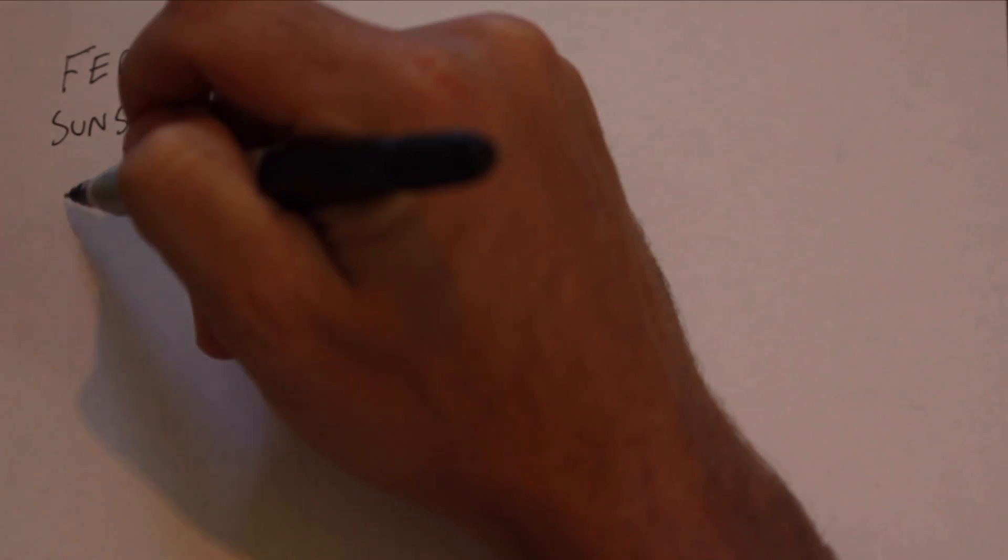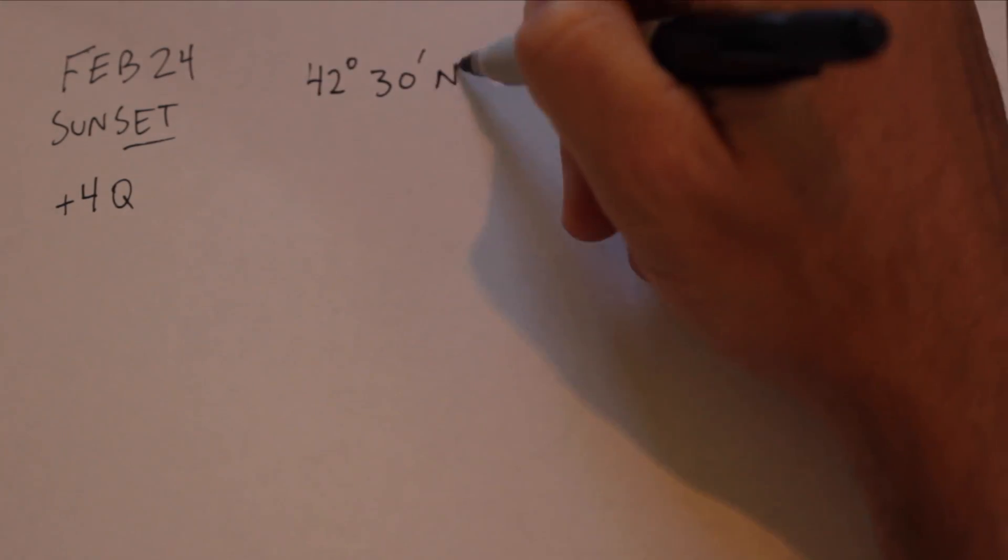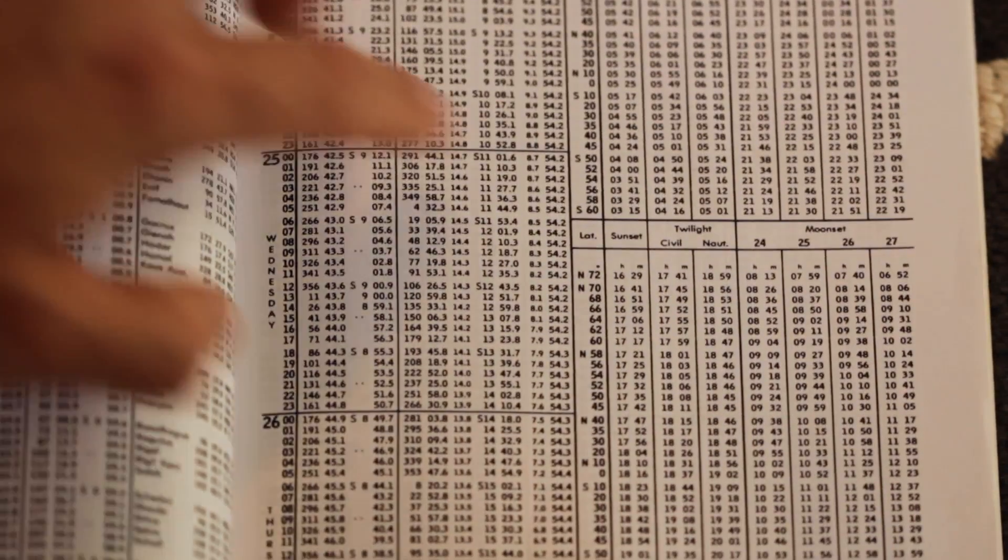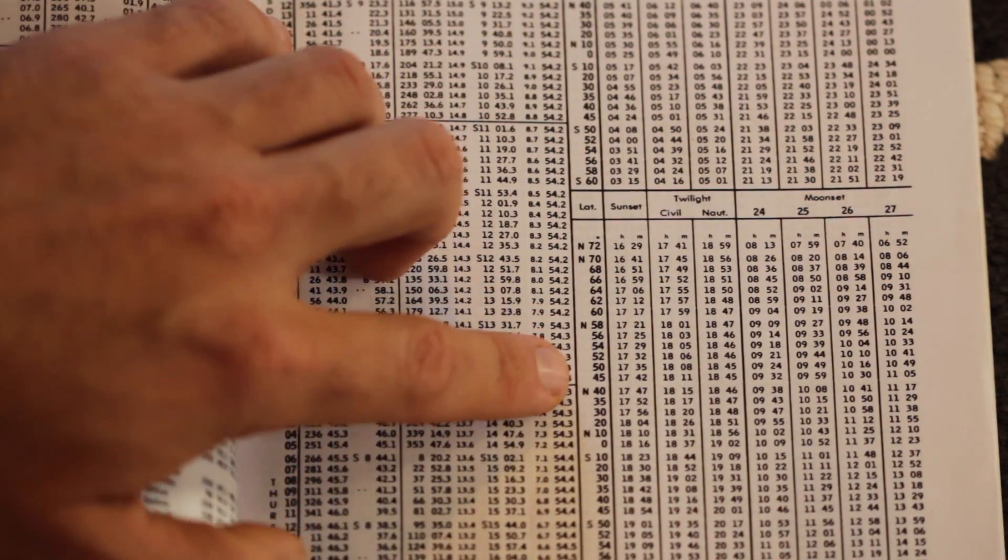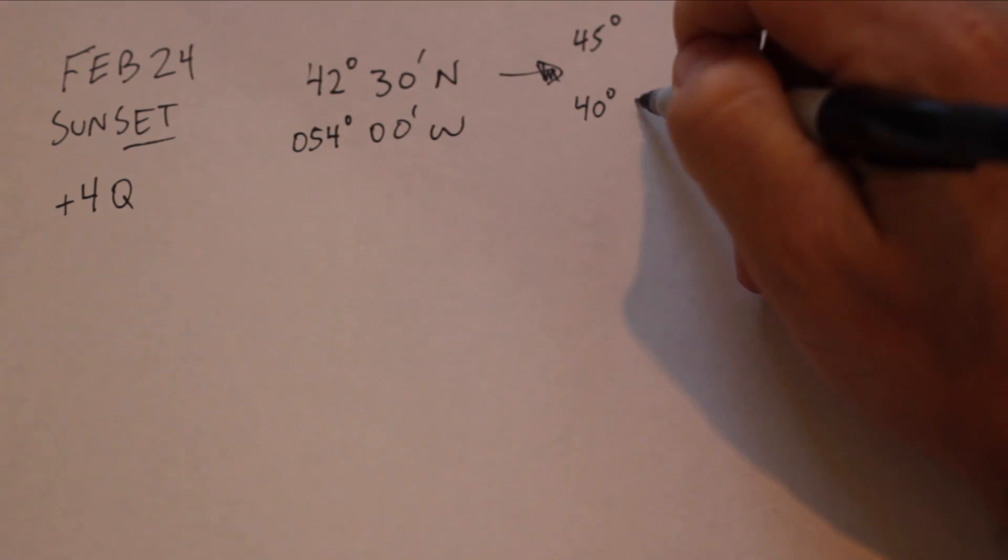Sunset is done the exact same way. So on 24 February, we are looking for sunset for position 42 degrees, 30 north, and 54 degrees west. First we correct for latitude. Again, our latitude isn't listed, but we are exactly halfway between two listed latitudes. So we can interpolate easily.